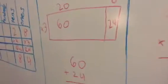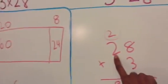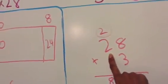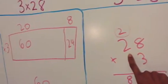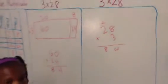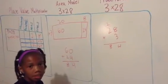And what place value is this 2 in? It's in the tens place. Yeah. So when you did 3 times 2 tens, you had 6 tens, and then you have your other 2. That's great.